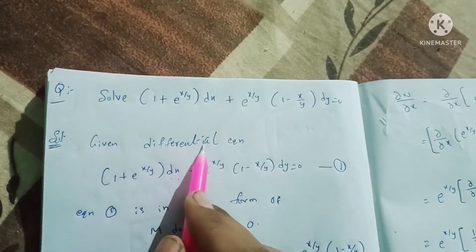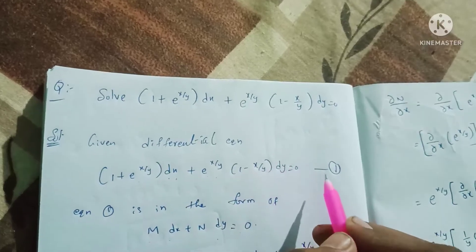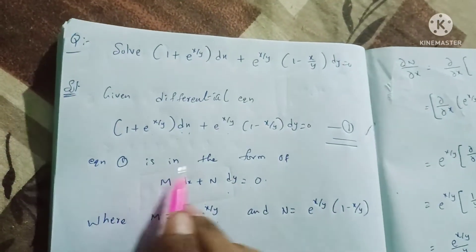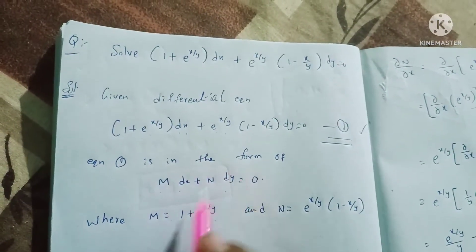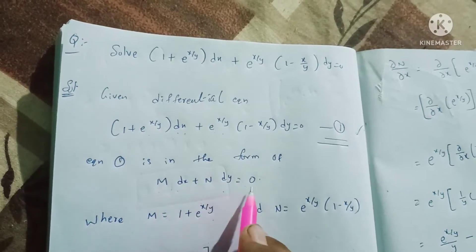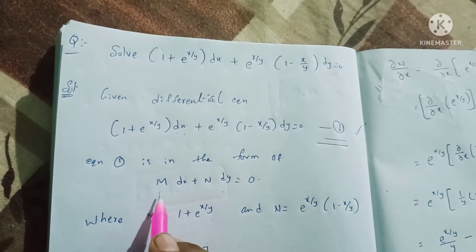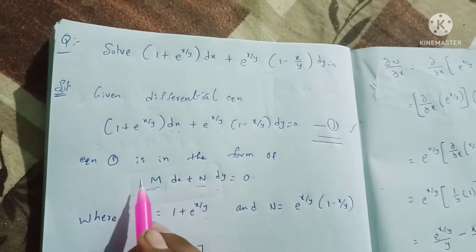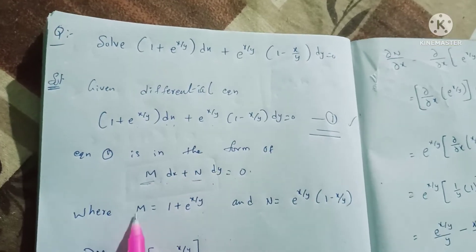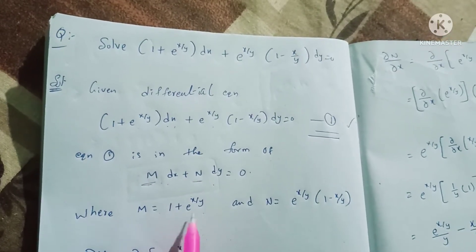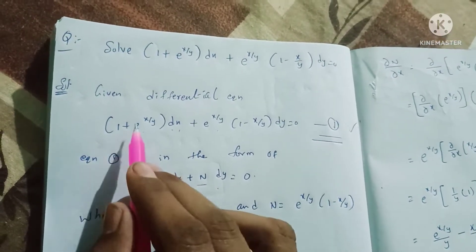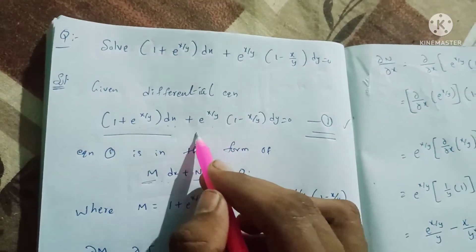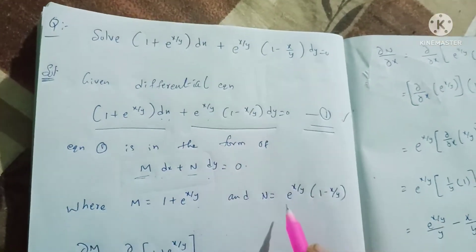Given differential equation, I will show you equation 1. The equation 1 is in the form of M dx plus N dy is equal to 0. M is equal to 1 plus e power x by y, and N is equal to e power x by y into 1 minus x by y.